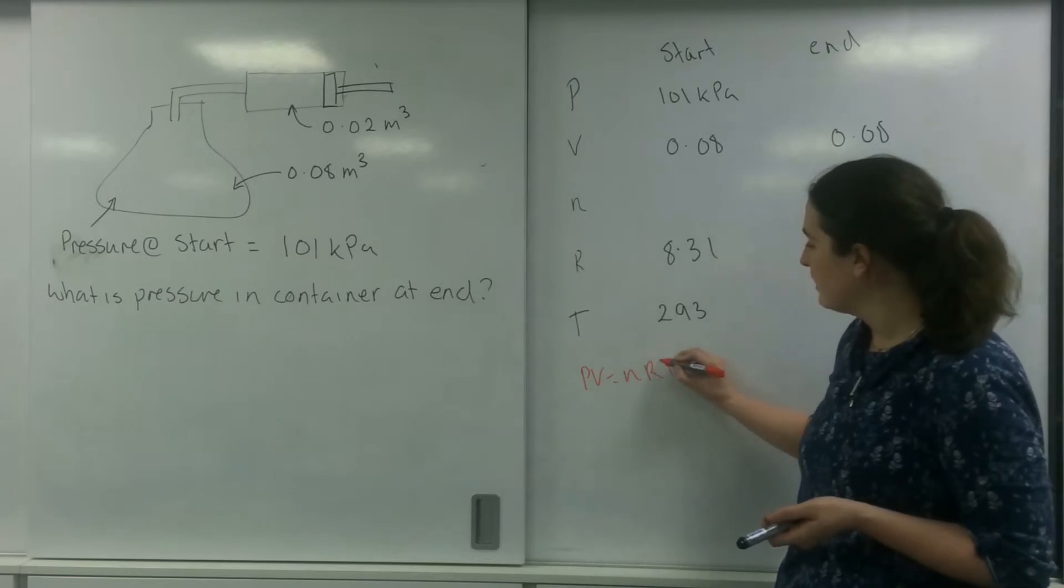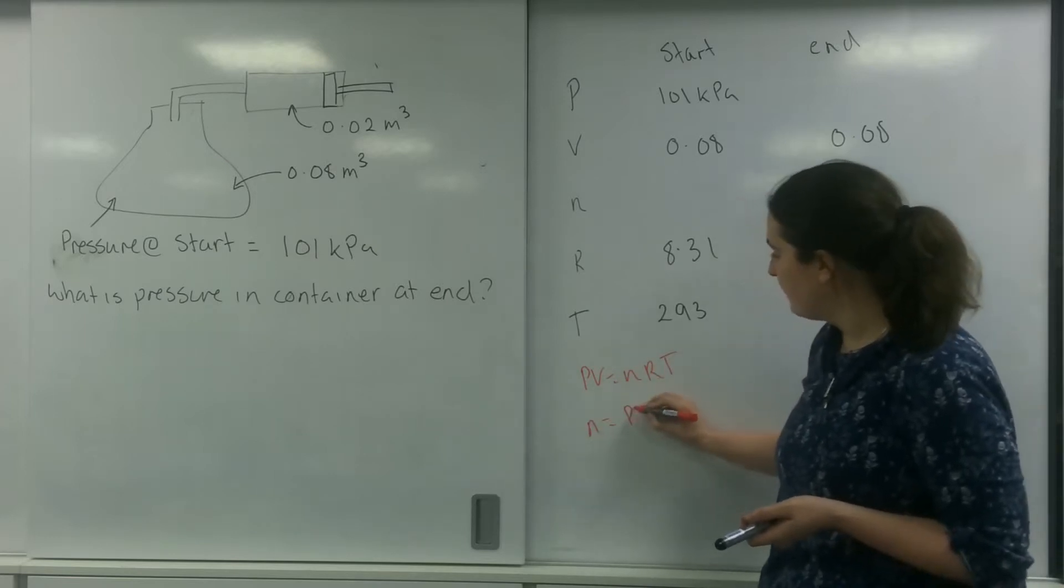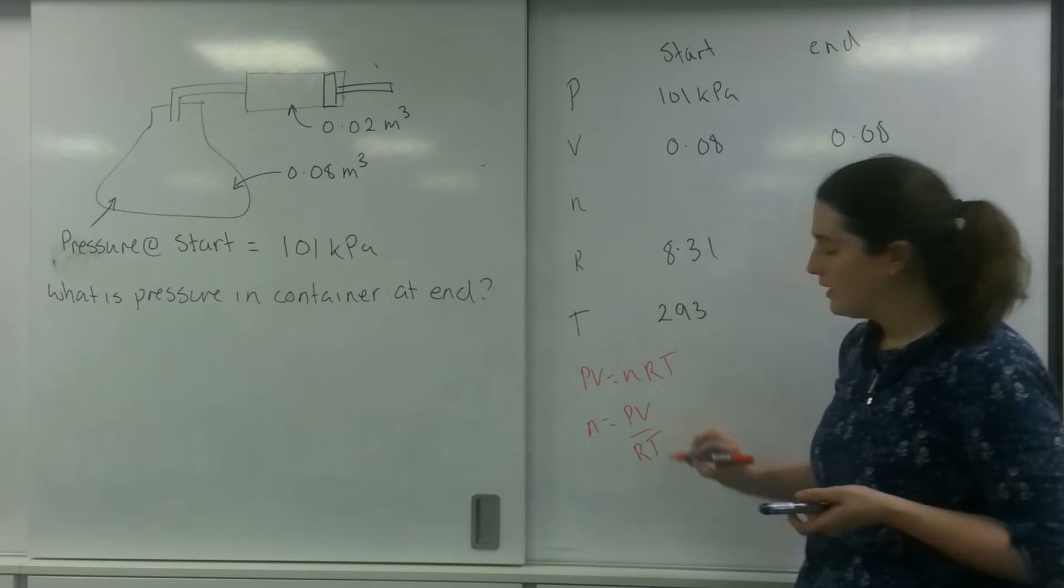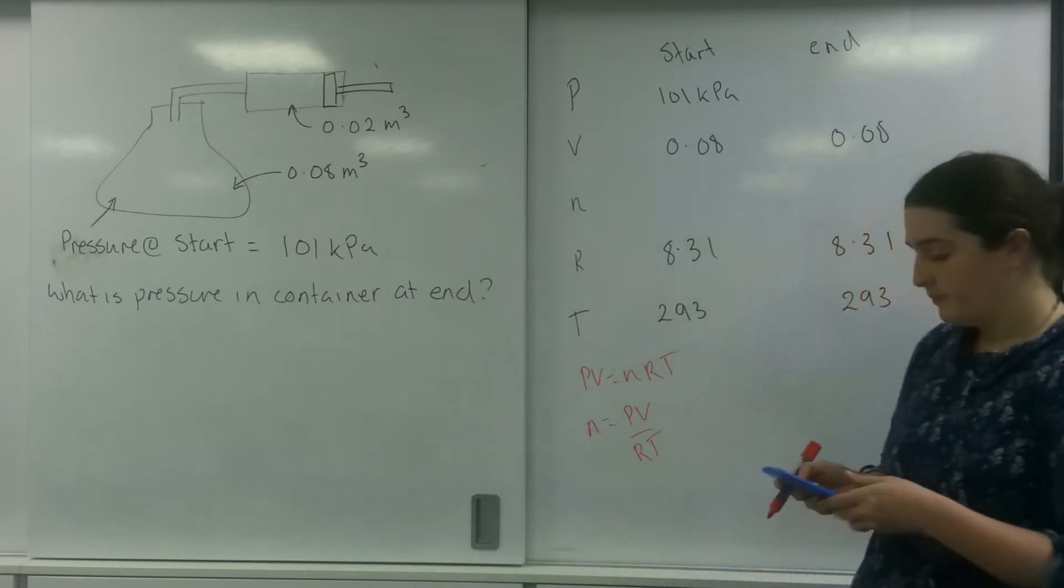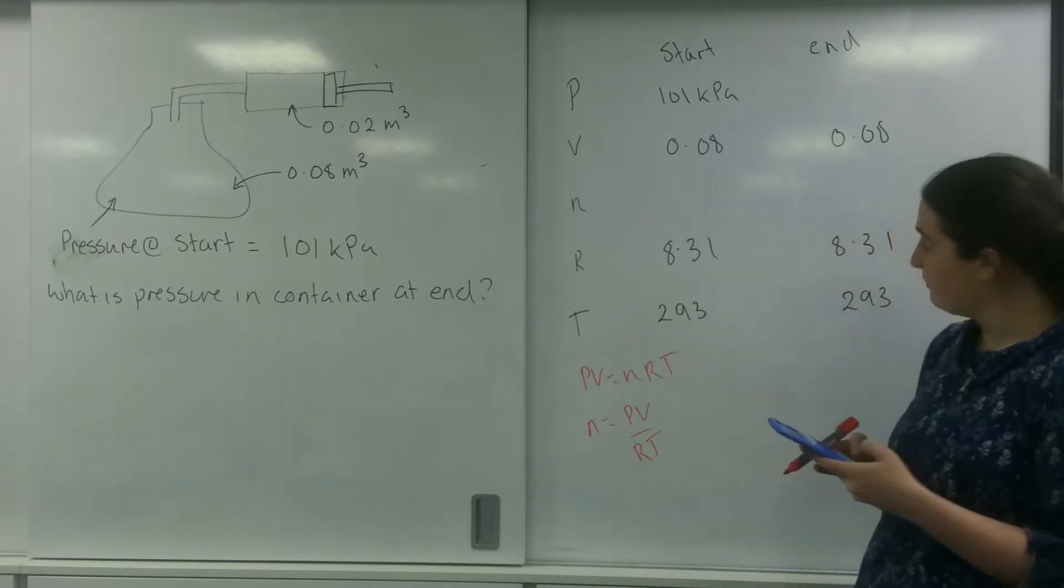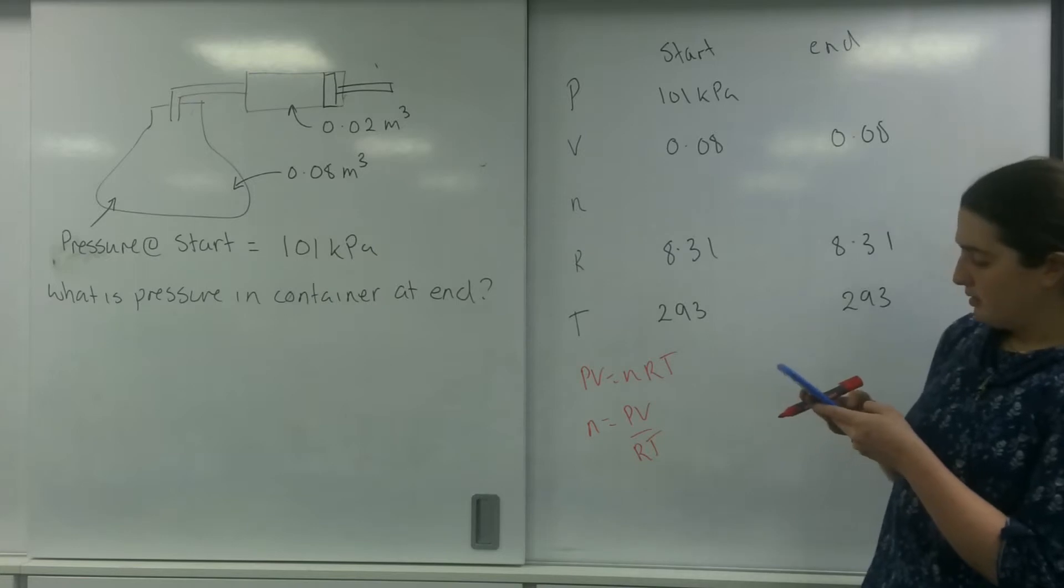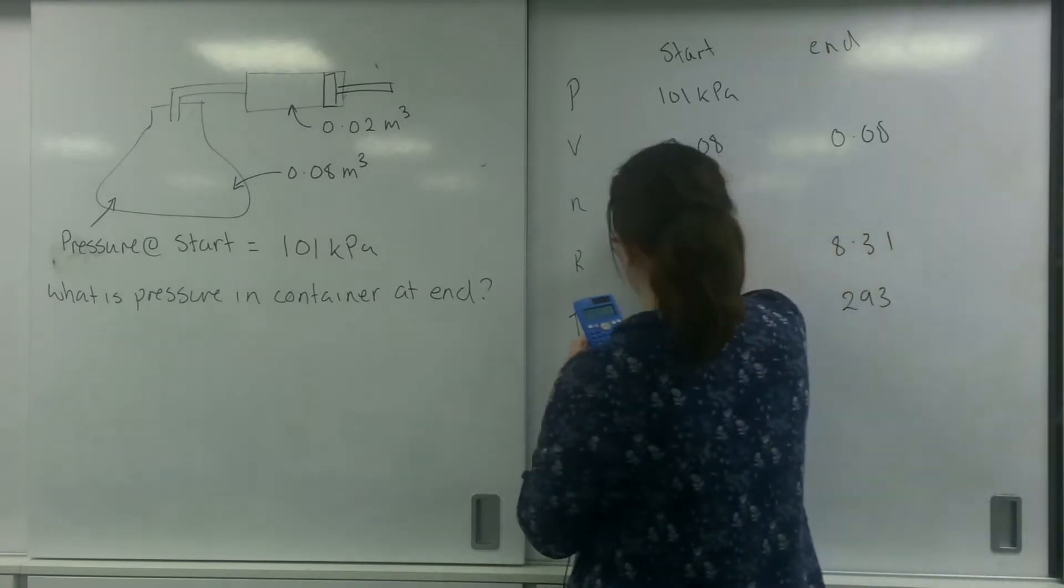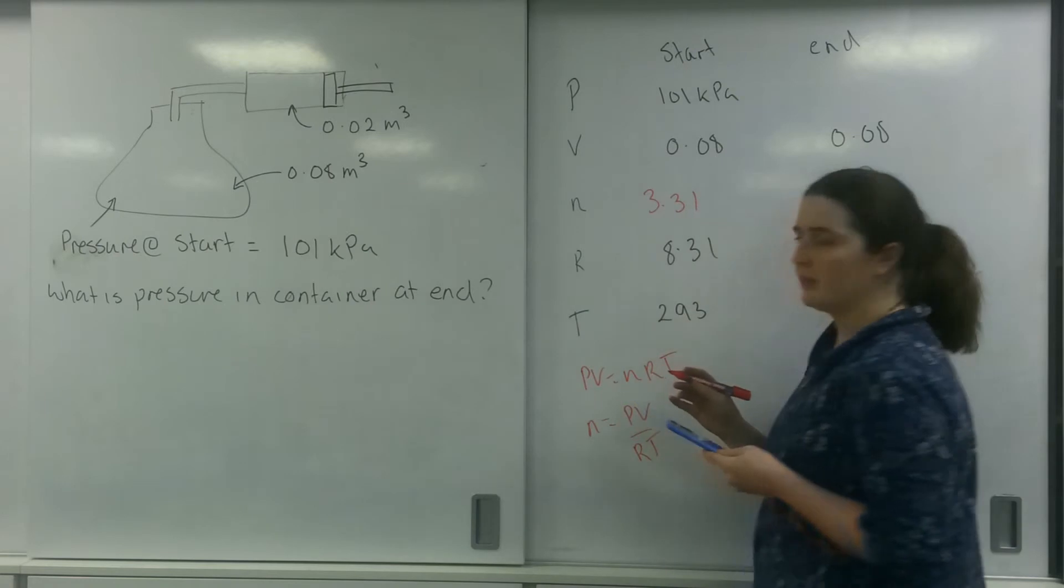So PV is nRT. n is PV over RT. So my n would be 101 times 10 to the 3 times by 0.08 divided by 8.31 divided by 293. So n is 3.31.